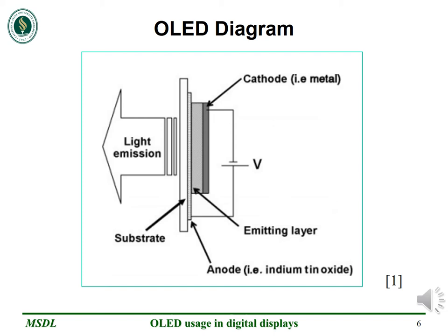When a voltage is applied between the electrodes, the charges are injected in the organic material. These charges are the holes from the anode and the electrons from the cathode. They move inside the material generally by hopping processes and then recombine to form excitons. The location of the recombination zone in the diode is a function of the charge mobility of the organic material as well as of the electric field distribution. After diffusion, the exciton recombines and a photon is emitted. The color of this photon is a function of the energy difference between the highest occupied molecular orbital and the lowest unoccupied molecular orbital levels of the electroluminescent molecule.